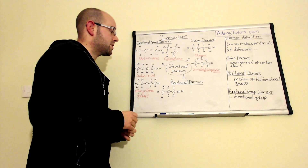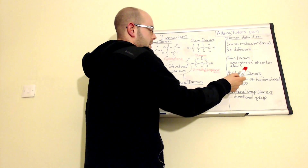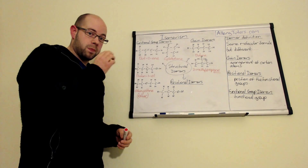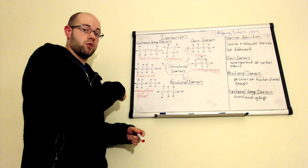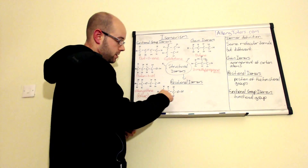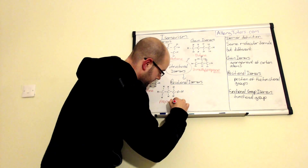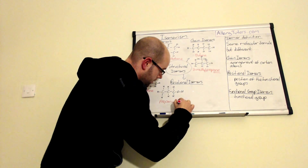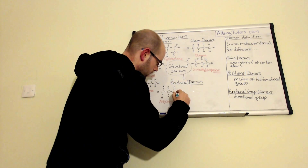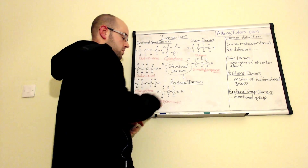Finally, positional isomerism: same molecular formula but a different position of the functional group — the functional group itself isn't changing, just its position. Here we have propan-1-ol: three carbons, with the alcohol on the first carbon. We know it's on the first carbon because it's on the end, and the lowest number that alcohol can be attached to is carbon one.